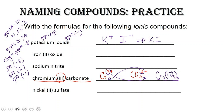Iron(II) oxide — iron, if it says iron two, that means it's a two plus charge. Oxide is in group 6A, so that means it's going to be a two minus charge. If we put one of each of these together, we get a neutral compound, so we're going to get FeO.